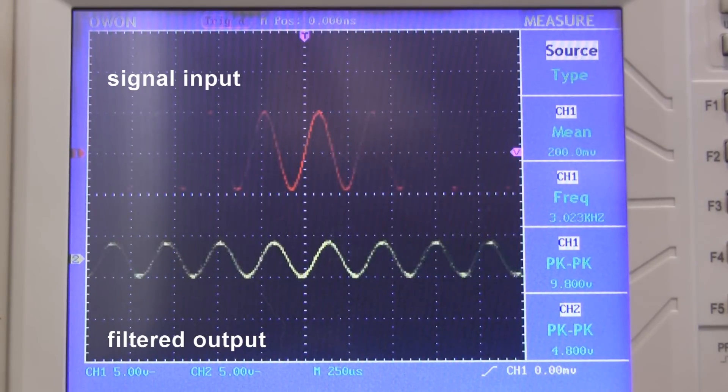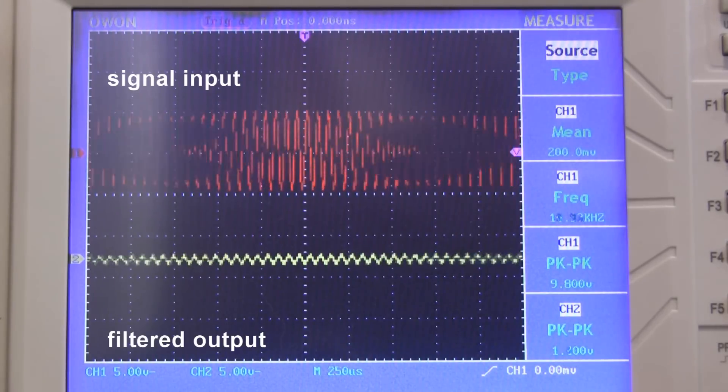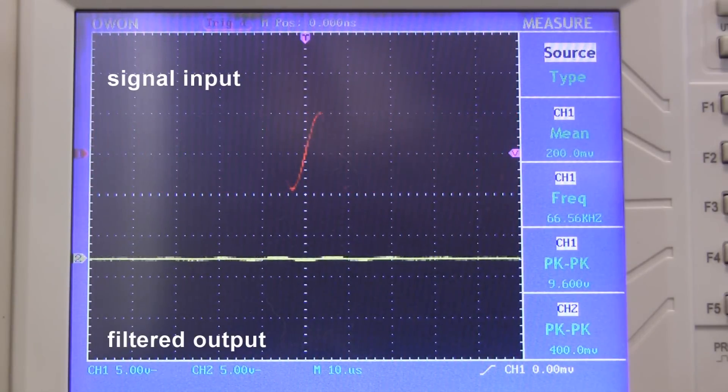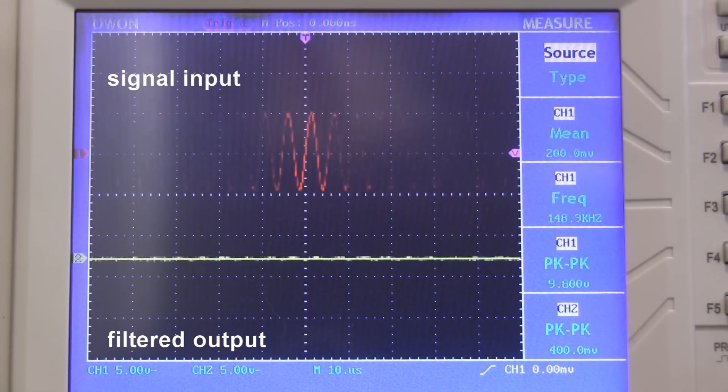Now let's increase the frequency way beyond the cutoff point. At 15 kHz, there's a massive reduction in amplitude. And as we get into higher frequencies like 50 kHz and beyond, there's almost nothing left of the signal.